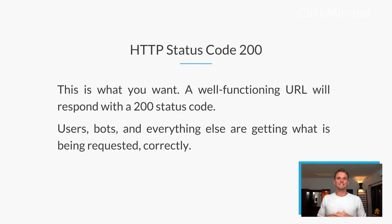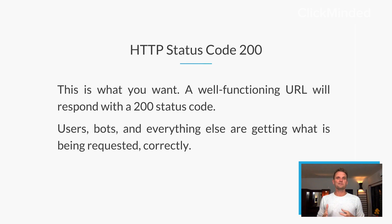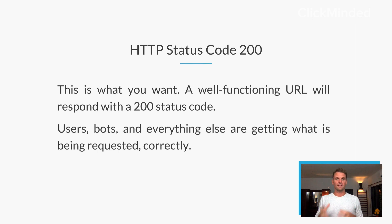Let's talk about the 200 now. The HTTP status code 200 means success — this is what you want. The HTTP status code 200 is fantastic. It means a well-functioning URL is responding and everything is working. Users, bots, everything else that you want to be requested and served is correctly being served. The vast majority of the time, you want to be going for an HTTP status code 200, so if you're seeing that, it's a good thing — no issues here at all.